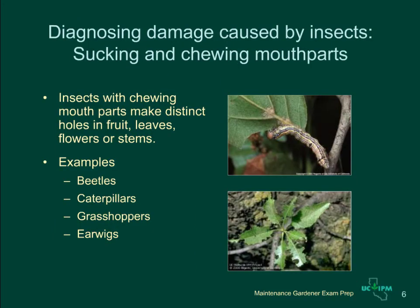When trying to diagnose a problem caused by an insect pest, it's important to be aware of the type of mouth parts the insect has. Insects with chewing mouth parts make distinct holes in leaves, fruit, flowers, or stems. Examples of insects with chewing mouth parts include beetles, caterpillars, grasshoppers, and earwigs.